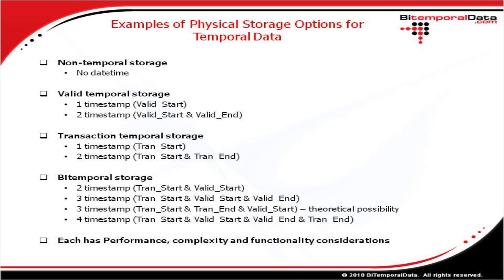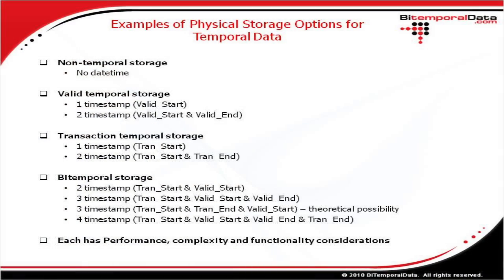For valid temporal storage, there is an alternative. You can implement valid temporal storage by having a single valid start timestamp, or you can implement it by having a valid start and a valid end. If you just have a valid start timestamp, the valid end would be the valid start of the next record. The same scenario exists for transaction temporal storage — you can have just the transaction start, with the end implied by the next transaction start, or you can have both transaction start and transaction end.